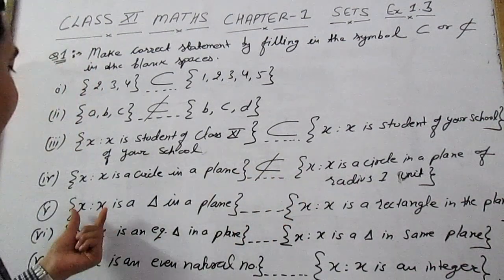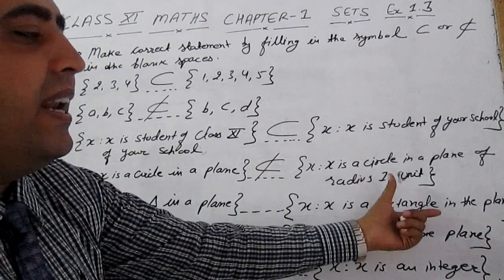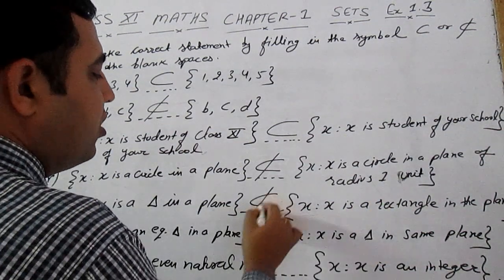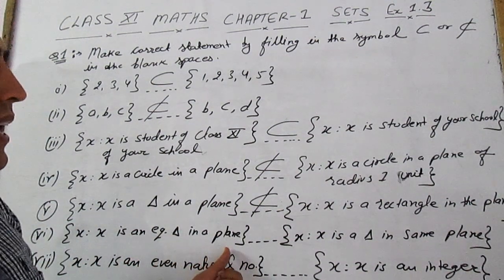x is such that x is a triangle in the plane; x is a rectangle in the plane. Clearly it is also not a subset.